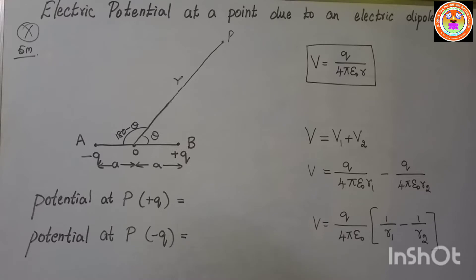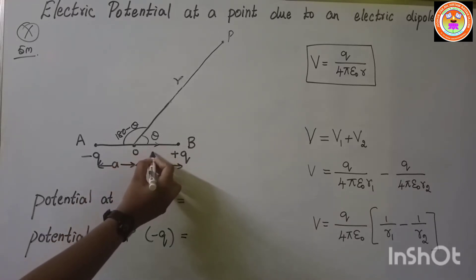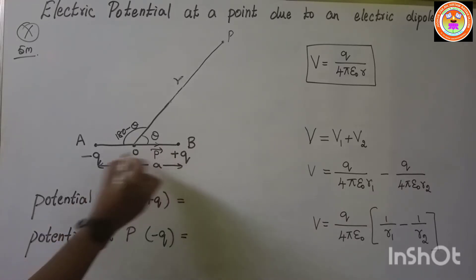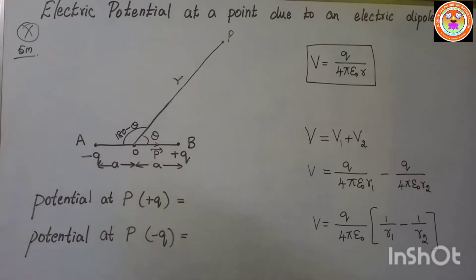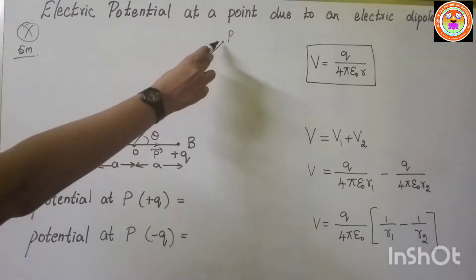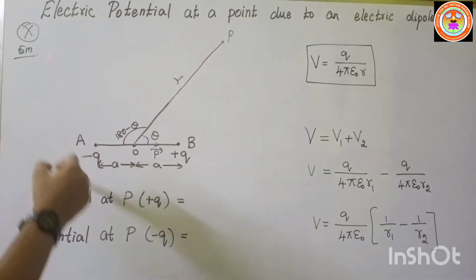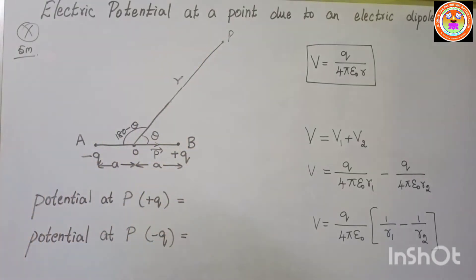The electric dipole moment direction is from minus q charge to plus q charge, denoted as p-vector. We want to calculate the electric potential at point P due to this electric dipole.